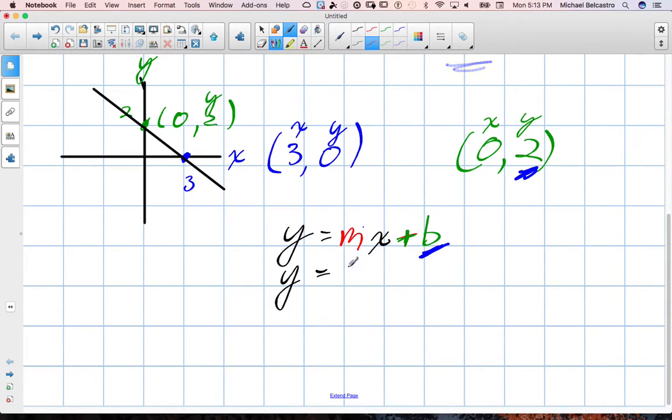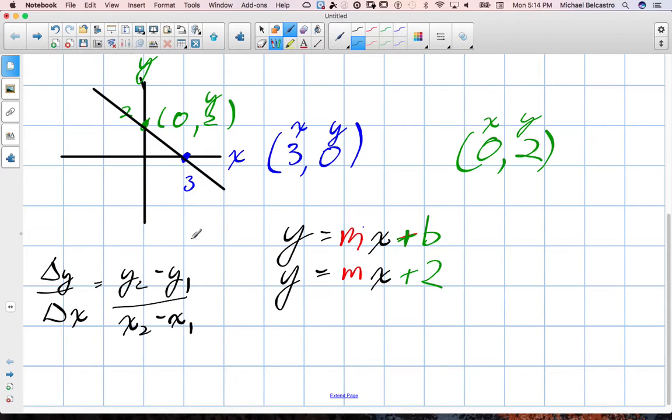So y is equal to m, x, and it's positive 2, so plus 2. So we already have one value. But we still have three unknowns: y, x, and most importantly m. m is what we have to find out. There are a couple ways we could go about doing this.